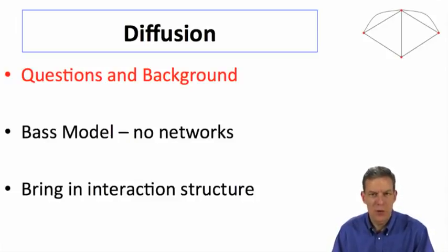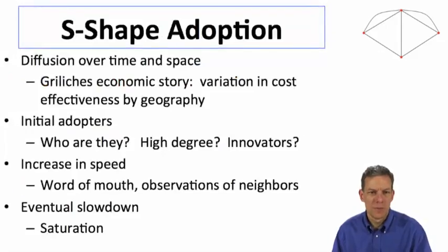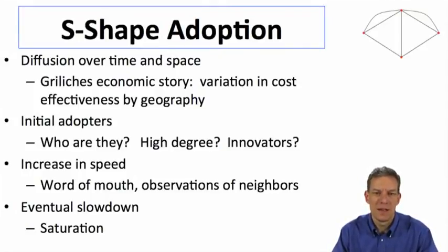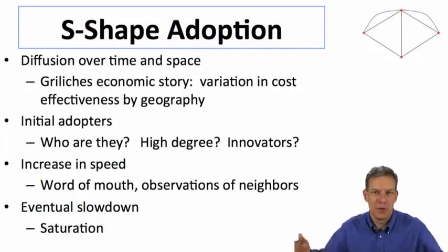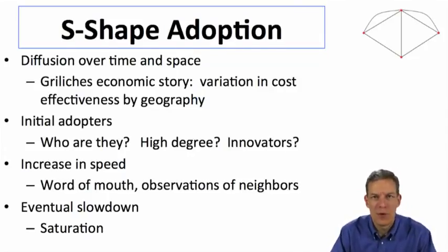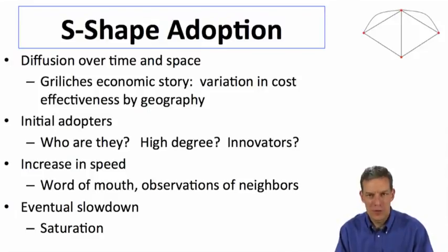We'll start with some background, then talk about the Bass model — the simplest and probably best-known model of diffusion — and then bring in network structure. When we think about diffusion, there's something known as S-shape adoption. When you look at diffusion over time, different patterns emerge: things start out slowly, they accelerate, and eventually peak. We can ask questions about who the initial adopters are — whether they have high or low degree — what accounts for different speeds of diffusion, and why there's an eventual slowdown.